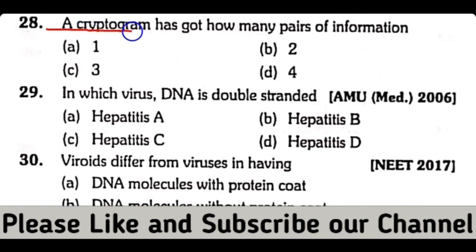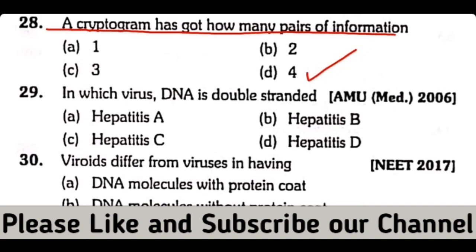Question number 28. A cryptogram has got how many pairs of information? 1, 2, 3, or 4. So the correct answer is option D. Each cryptogram contains 4 pairs of information.